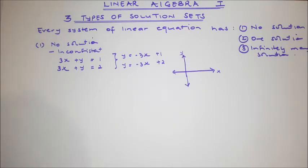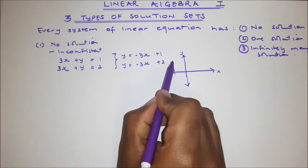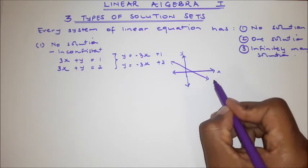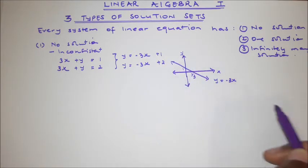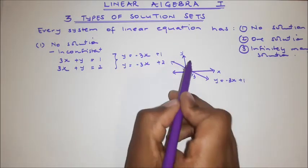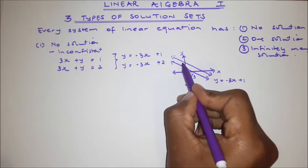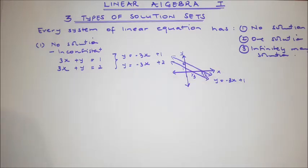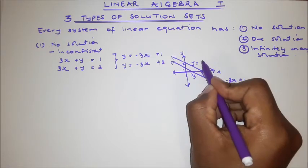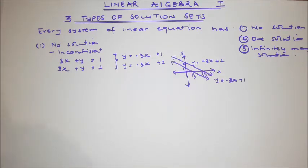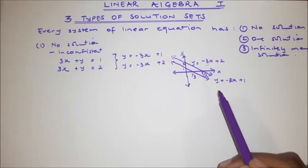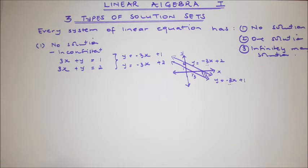I'm going to sketch these two lines. The first one is y equals minus 3x plus 1 — the y-intercept is 1 and the x-intercept is 1 over 3. The second line is y equals minus 3x plus 2 — the y-intercept is 2 and the x-intercept is 2 over 3. So this linear system is inconsistent because there is no way these two lines will ever cross or intersect at any point. The gradient of both lines is negative 3, so these two lines are parallel.